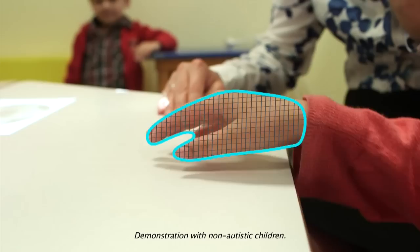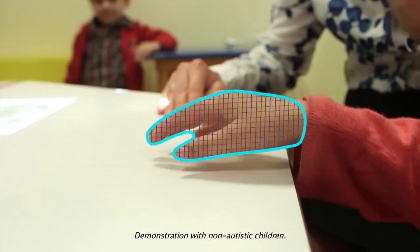The computer can track the child's hand even if it doesn't touch the table. And the system can be adapted to use real 3D objects,